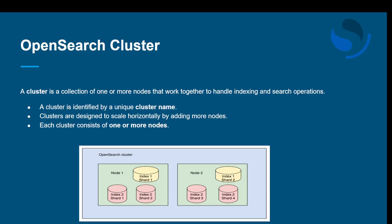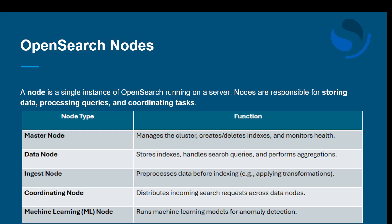Taking the digital library catalog example — if the load increases, you can add more nodes to the cluster. Suppose we have one node with indexes, and we need more capacity; we can add another node to handle the additional traffic. Having multiple nodes definitely helps user experience and enables faster, more reliable searches.